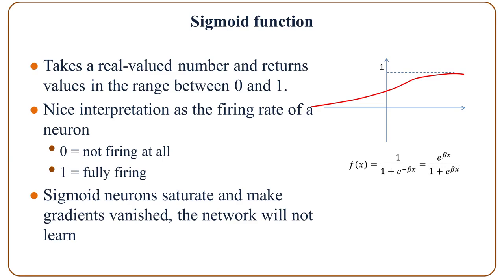The first is the sigmoid function. The sigmoid function takes a real-valued number and returns values in a range between 0 and 1. It has a nice interpretation as the firing rate of a neuron — if it is 0 then it is not firing at all, and if it is 1 then it's fully firing.